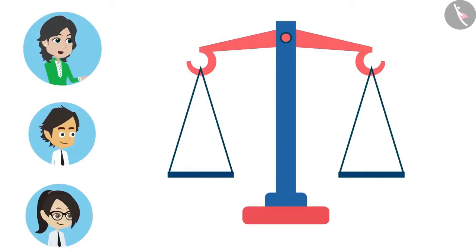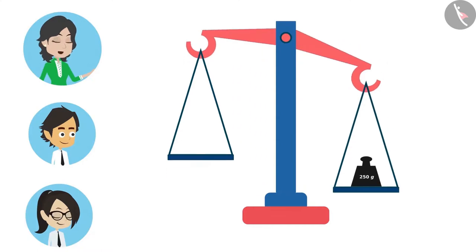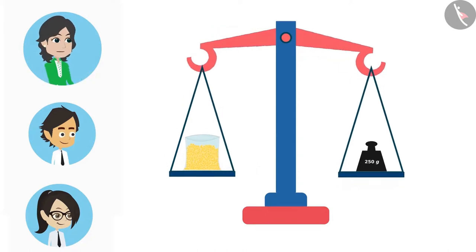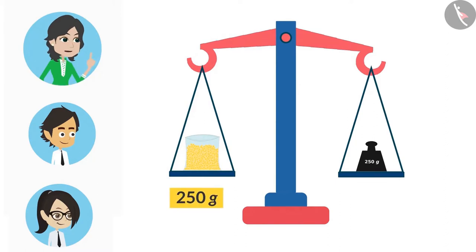For this, we will keep 250 gram weight on one side of the scale and we will keep adding dal on the other side of the scale till both sides of the scale are balanced. Look, now there is 250 gram dal on one side of the scale.